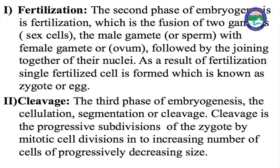Second: Cleavage. The third phase of embryogenesis is segmentation or cleavage. Cleavage is the progressive subdivision of the zygote by mitotic cell division into an increased number of cells of progressively decreased size.